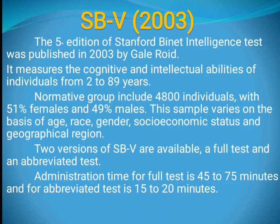There are two versions of SB5 available: a full test and an abbreviated test. The full test takes 45 to 75 minutes for administration, and the abbreviated test requires 15 to 20 minutes for administration.